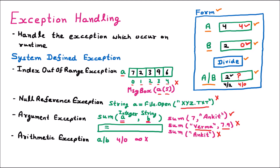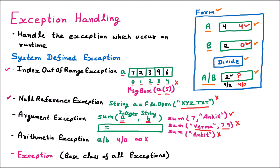The next exception is the base class for all exceptions, called Exception. We have many specific exceptions such as IndexOutOfRangeException, NullReferenceException, ArgumentException, and ArithmeticException. If in your program you don't know which type of exception will occur, you can use the main base class Exception, which will handle all exceptions. All exceptions are generated from the Exception class, so mentioning Exception means all exceptions can be handled.